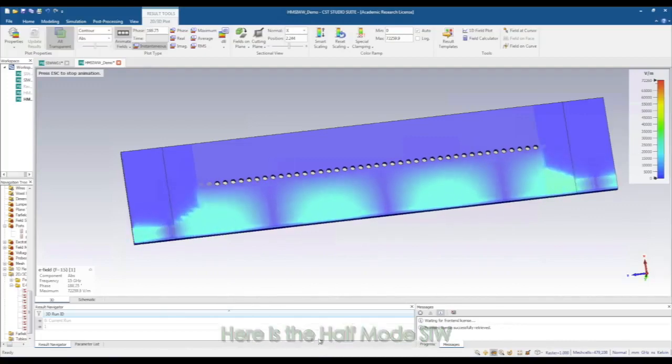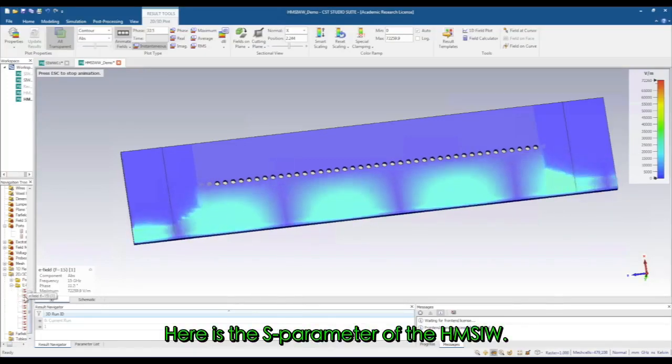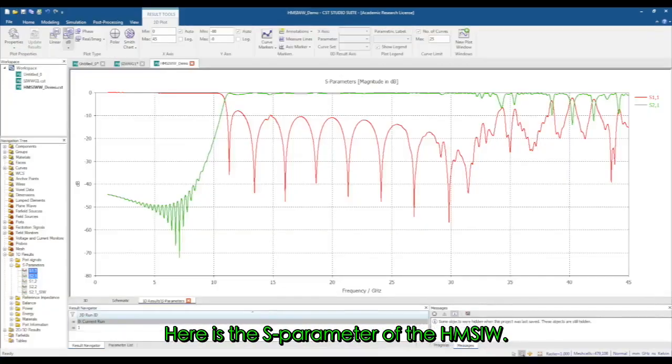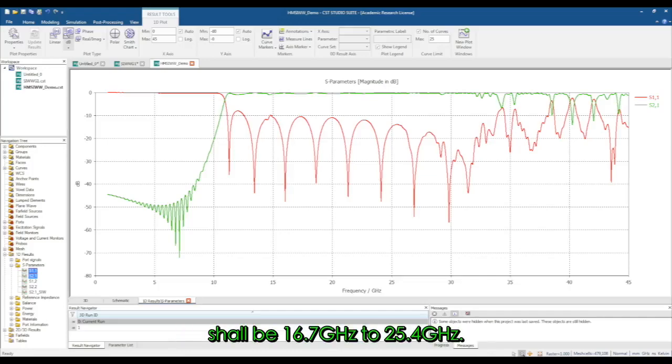Here is the half mode SIW which is fed by microstrip line. Here is the S parameter of the half mode SIW. The cutoff frequency of this structure is at 13.4 gigahertz, and the proper working frequency shall be 16.7 gigahertz to 25.4 gigahertz.